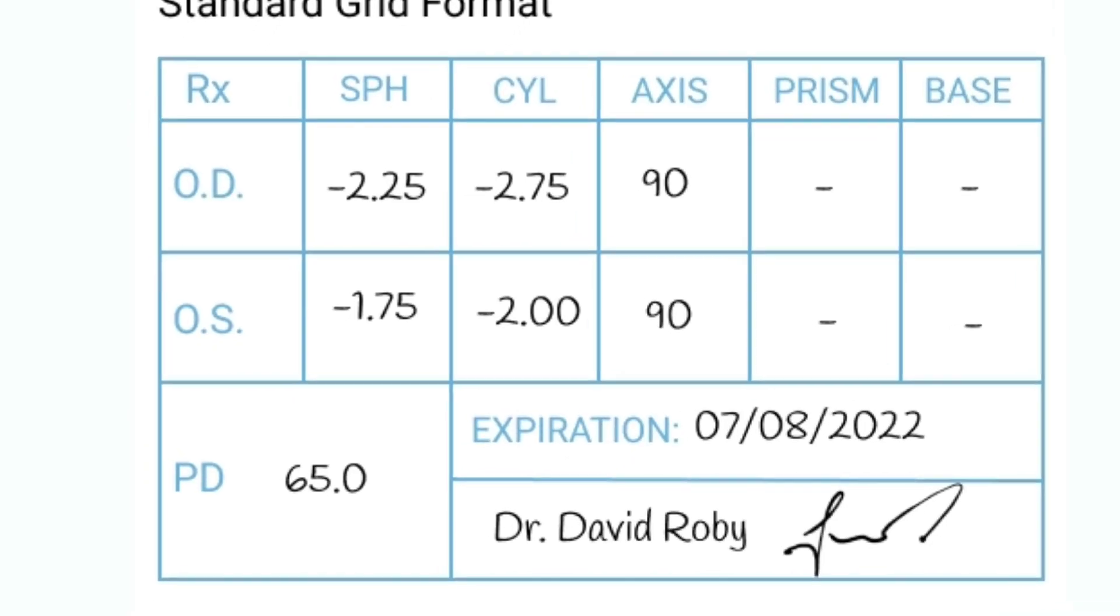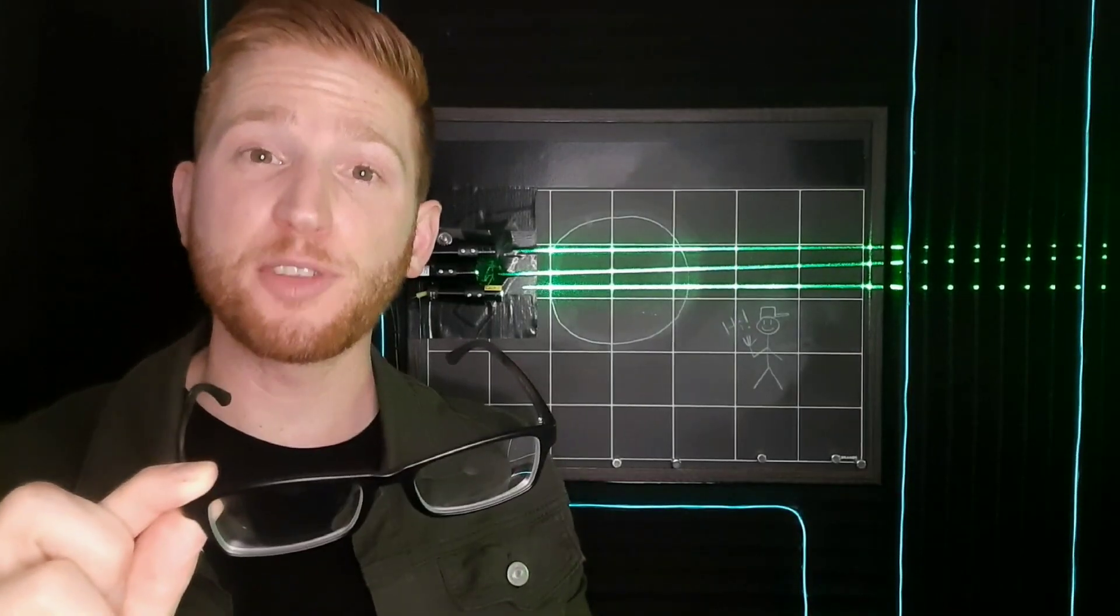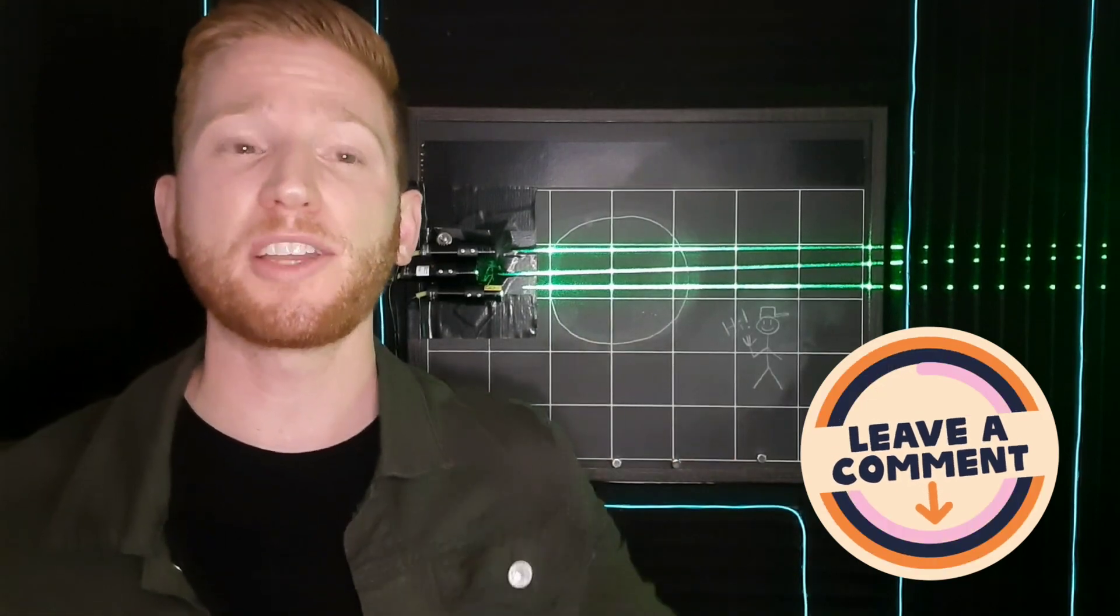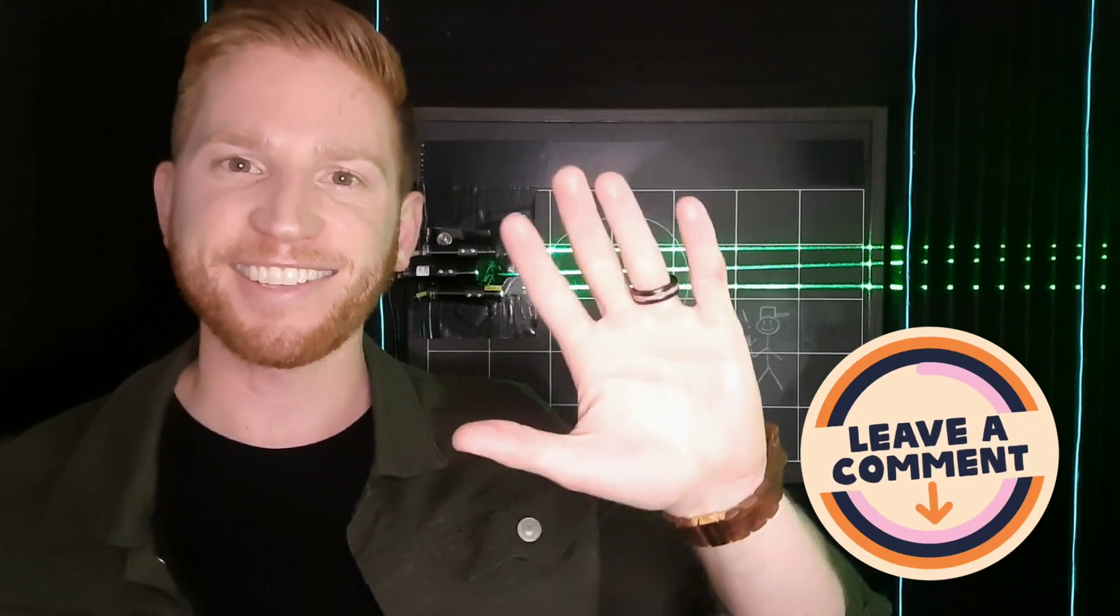You may also see a value for PD or pupillary distance. It's quite simply the distance between your two pupils. I hope that helped you better understand what your prescription really means. Please comment down below to let me know what other eye-related topics you'd like me to talk about. Thanks.